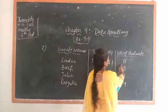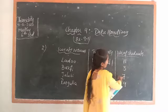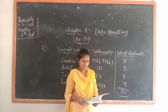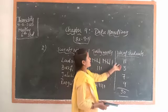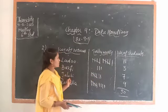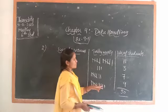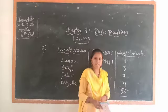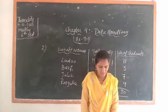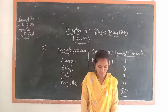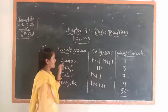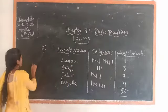Now add the total number of students: 11 plus 3 is 14, 14 plus 7 is 21, 21 plus 9 is 30 students total. So ladu has 11, burfi 3, jalebi 7, rasgulla 9, totaling 30 students. For question B — which sweet is preferred by most students? The answer is ladu, as it has the highest number: 11 students.